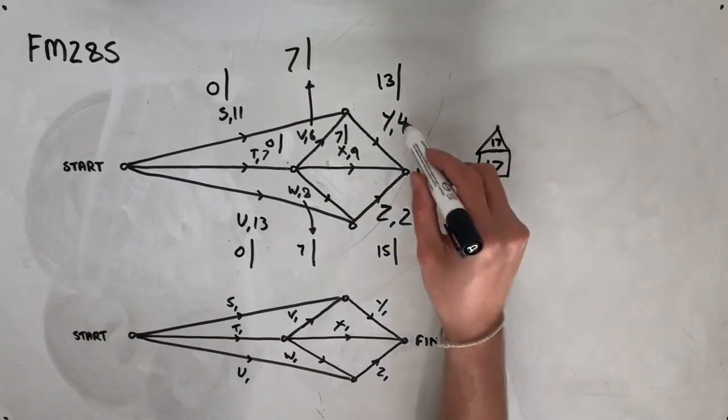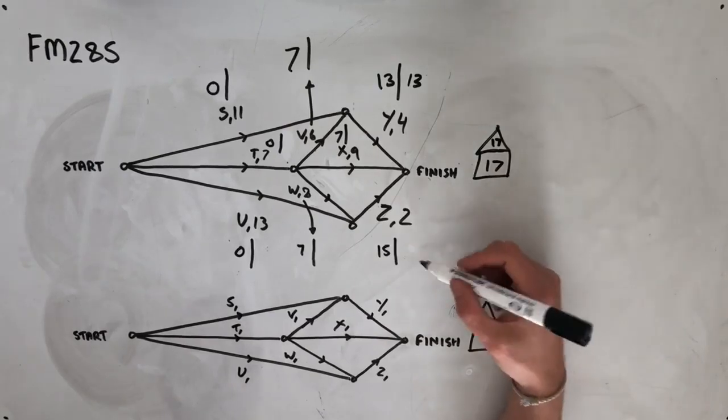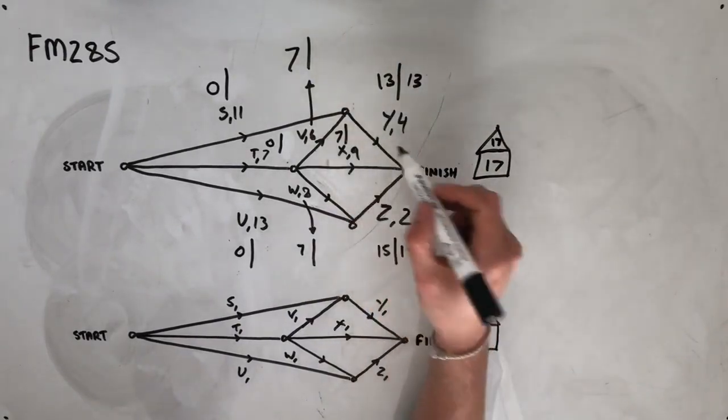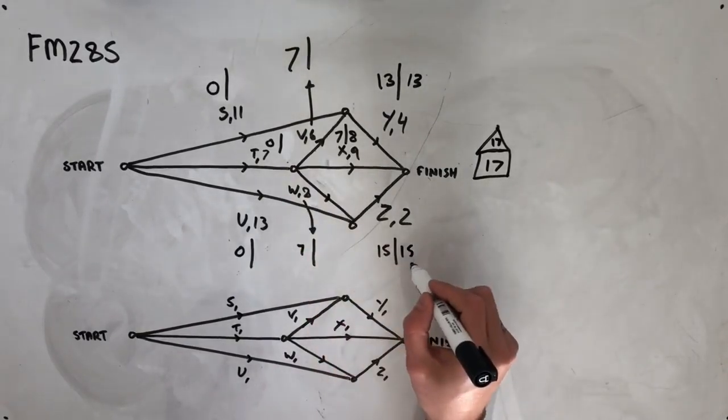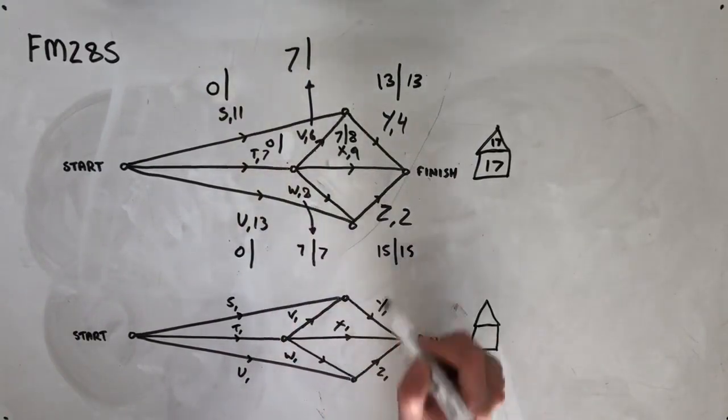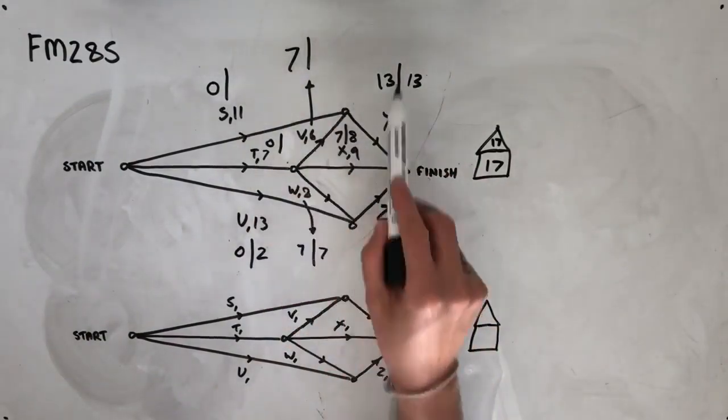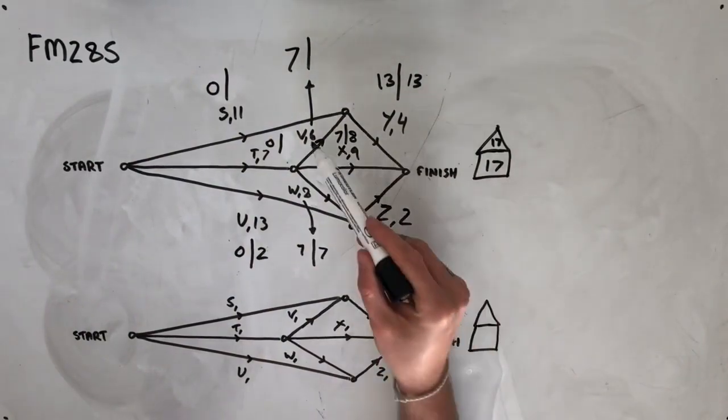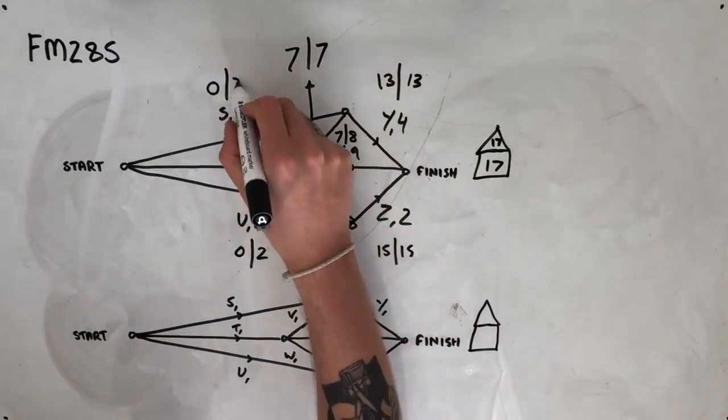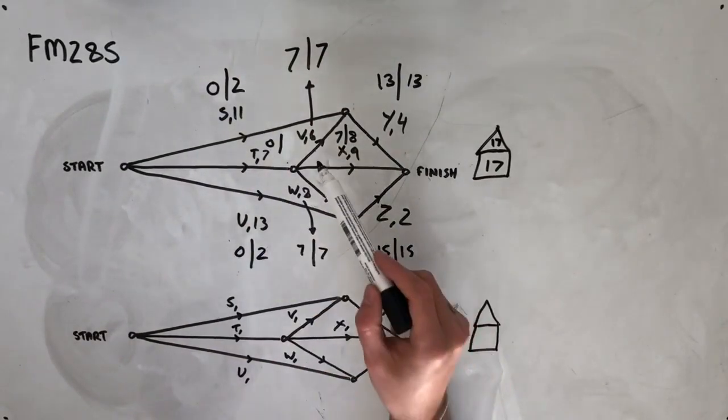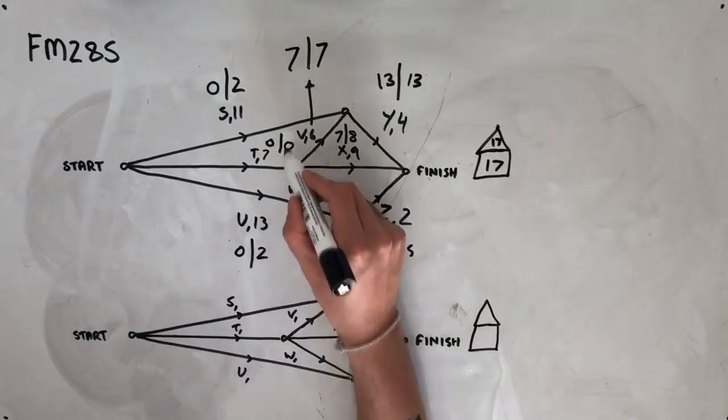Working this backwards, if we take four away from our 17, we've got 13. If we take two away from our 17, we have 15. And if we take nine away from our 17, we get eight. Moving backwards from here, taking eight away from our 15, we should get an answer of seven. Taking 13 away from our 15, we should get an answer of two. Moving backwards from activity Y, if we take six away from our 13, we should get seven. And if we take 11 away from our 13, we should also get two. Our last activity, activity T, we've got seven days working backwards from V or seven days working backwards from W, which either way is going to land us at zero here.